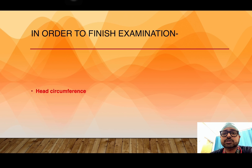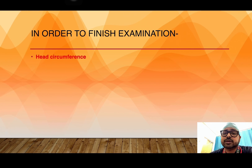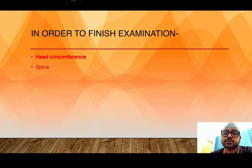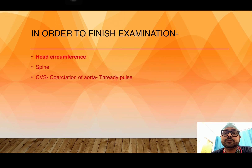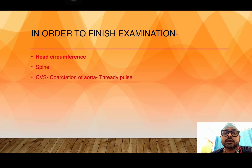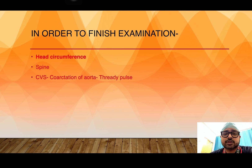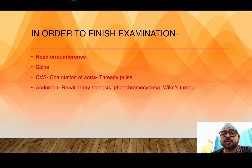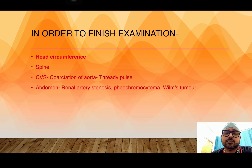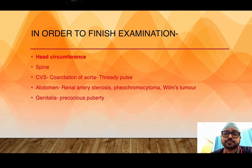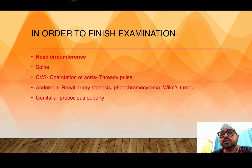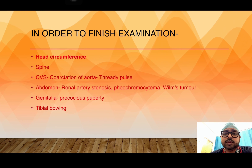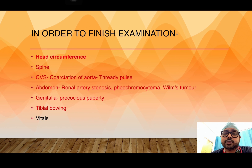In order to finish the examination, don't forget to measure height and OFC, as it is very important. Examination of the spine, because kyphosis and scoliosis could be associated. Examination of the CVS system, because coarctation of the aorta is sometimes associated and radio-femoral delay could be present. Examination of the abdomen because renal artery stenosis, phaeochromocytoma, and Wilms' tumor may be present. Examination of genitalia to rule out any precocious puberty. Look for any tibial bowing and don't forget to measure vitals.